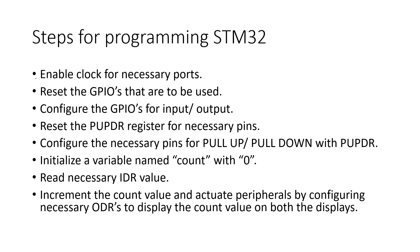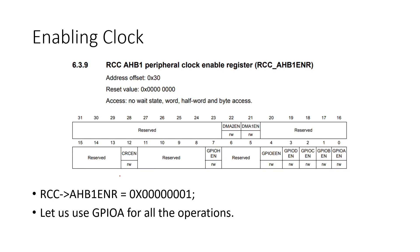The programming steps are the same as the previous video for the first five steps: enabling the clock, resetting the MODER, configuring the MODER, resetting the PUPDR, and configuring the PUPDR. The next three steps are application-specific: initializing a count variable to zero, reading the IDR value, and incrementing or decrementing the count based on the switch, then pushing the result to the ODR. For the clock, we are using only port A, so we enable clock only for GPIOA on the AHB1 bus.